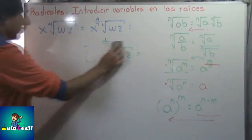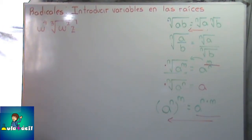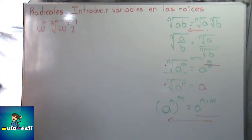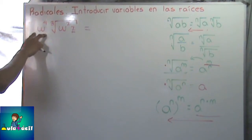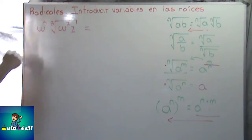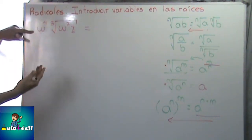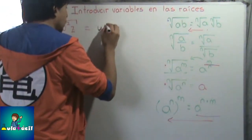Borramos todo esto. W a la 4 por raíz cúbica de W cuadrada Z. Este es nuestro siguiente ejemplo; es parecido a los anteriores, nada más con una pequeña diferencia: en los ejemplos anteriores la variable de afuera no tenía un exponente, en este caso sí lo tiene. No importa — se resuelve de la misma forma. Adentro ya tenemos varias variables, y afortunadamente la variable de afuera es la misma que la de adentro, así que podemos introducirla y simplificar todavía más.